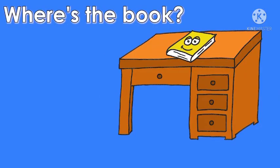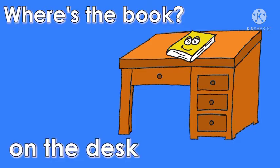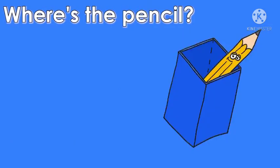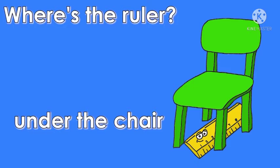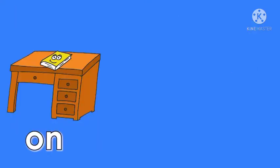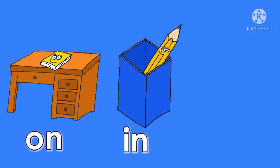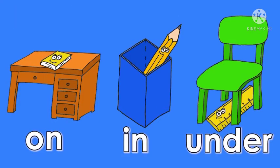Now where is the book? It is on the desk. Where is the pencil? The pencil is in the box. Where is the ruler? Under the chair. On, in, under.